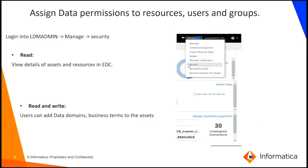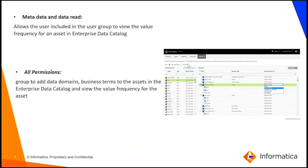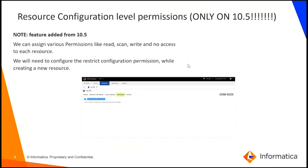There are four data permissions: Read, Read and Write, Metadata and Data Read, and All Permissions. Read allows you to view the details of assets and resources in EDC. Read and Write allows you to assign data domains and business terms to these assets. Metadata and Data Read allows users to view the value frequency of an asset in the EDC catalog. Note that business terms and data domains are referred to as enrichments.